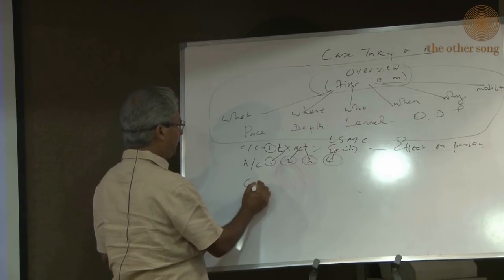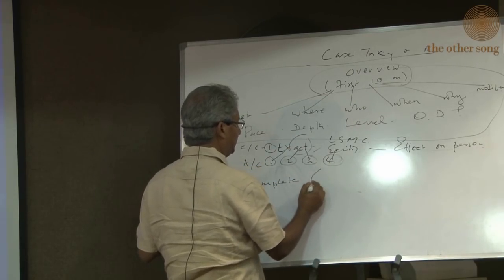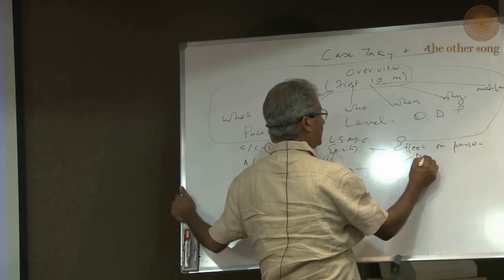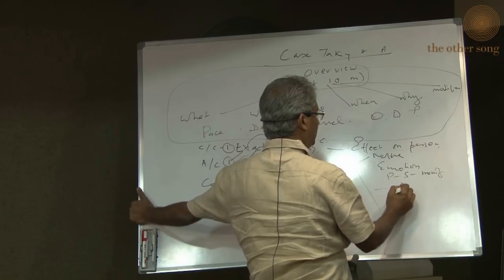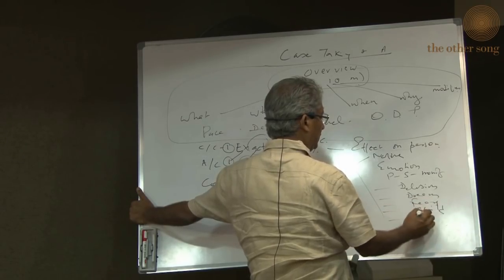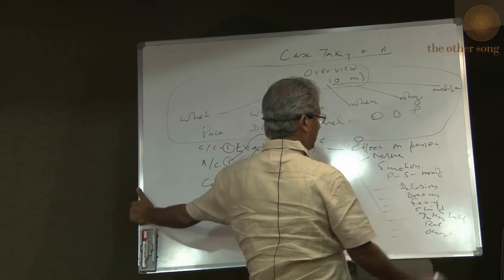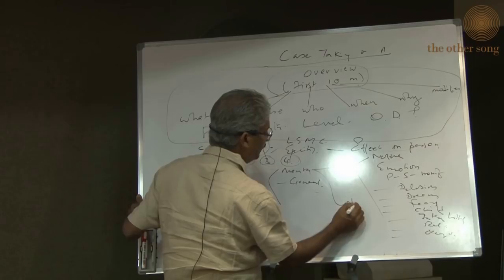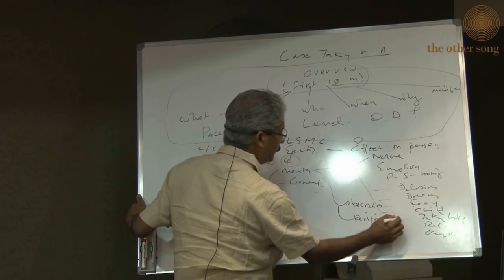Then comes completeness. That means if the patient has given physical symptoms, you complete it with the mental and the general. In the mental, you can have the nature, the emotions, the psychosomatic manifestations, the delusions, the dreams, the fears, childhood, interests and hobbies, activities, relationships, occupation, etc. A very important part of this is observation. And a very important part is peripheral vision — one thing leading to another.